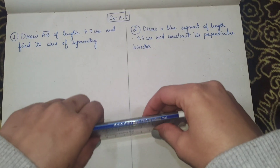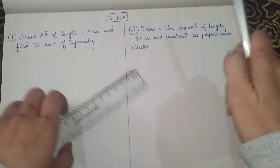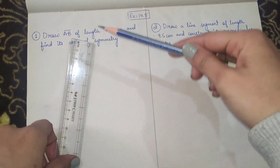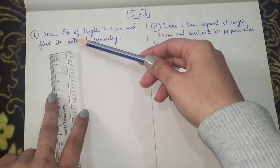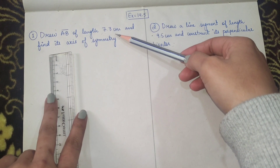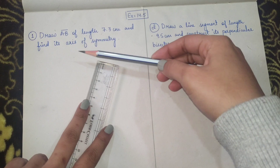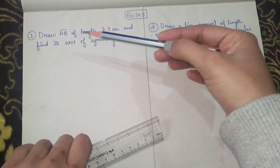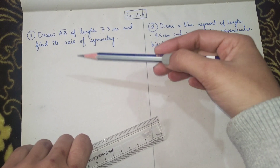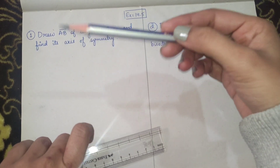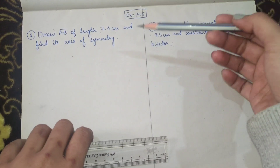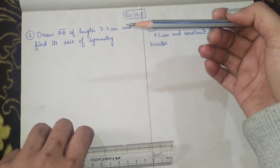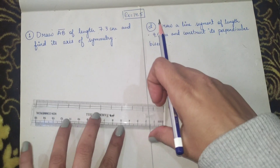Good morning everyone. We'll do exercise 14.4 question 1 - draw line segment AB of length 7.3 centimeters and find its axis of symmetry. Now, axis of symmetry and perpendicular bisector are the same things. So if they ask you to draw a perpendicular bisector or find the axis of symmetry, they mean the same thing.